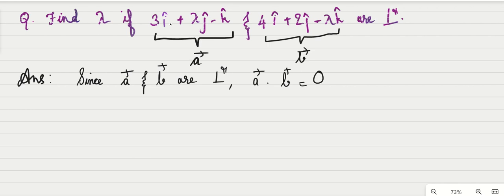Now do the dot product: 3 times 4 is 12 plus 2 lambda, 12 plus 2 lambda minus minus plus lambda is equal to 0. 1 plus 2, 3 lambda is equal to minus 12, lambda is minus 12 by 3, minus 4.